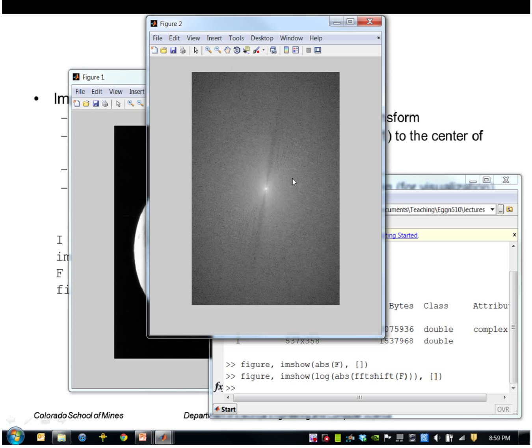And then the value, we can also see some values outside the middle here. So again, the middle represents zero frequency. As we move outward from the middle, we move to higher and higher frequencies.